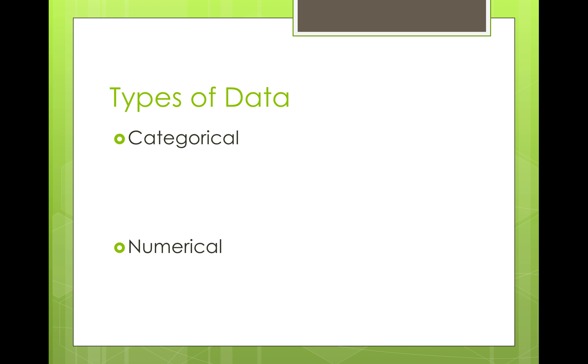There are two types of data. First, categorical data. This is data that breaks people into groups, so like your favorite ice cream flavor. You might have vanilla, chocolate, mint chocolate chip. Those are different categories, or what type of pet you have or your eye color.